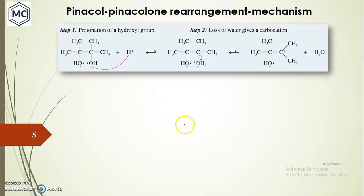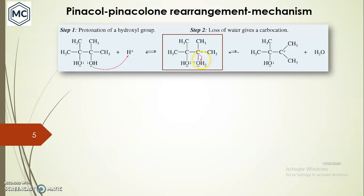Coming to the mechanism, we start with pinacol, which contains two hydroxyl groups. There is a lone pair on the oxygen, and in the presence of acid, one of the hydroxyl groups gets protonated. You can see here it forms a hydronium ion — one hydroxyl group is converted into a hydronium, which is quite unstable — and this can lose water to form a carbocation intermediate.